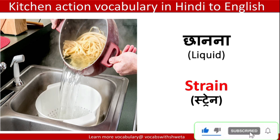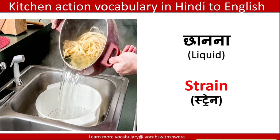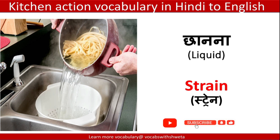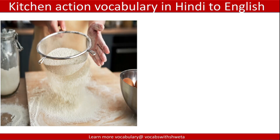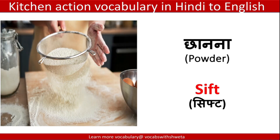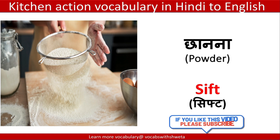We have two types of ingredients. When we strain a liquid, we call it 'strain.' And when we sift a powder like aata (flour), we call it 'sift.'